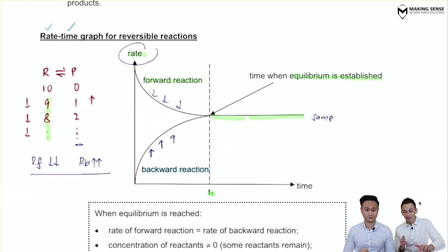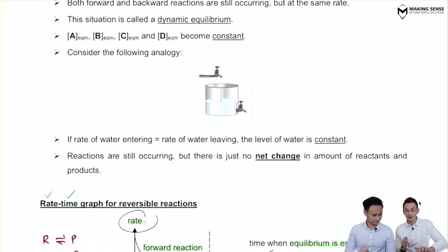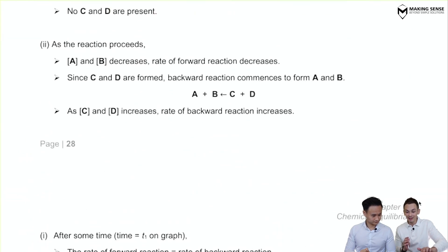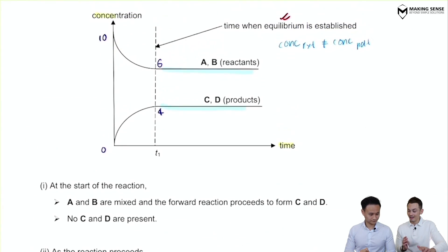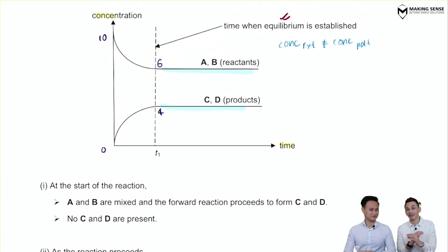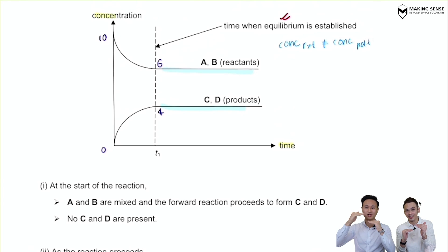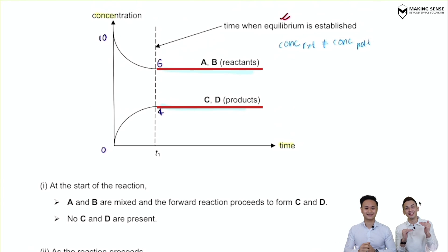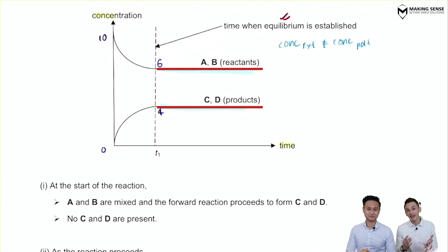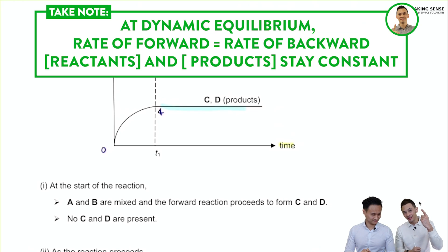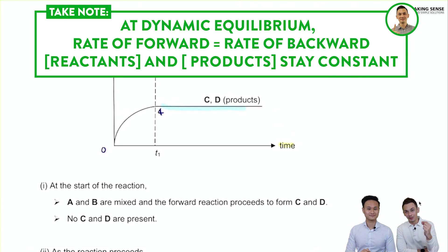When this happens, you have reached a state of dynamic equilibrium. Don't be confused by these two graphs — they are different. When it comes to rates, one of them is going down and one is going up until they meet and become identical. But as mentioned in the concentration-time graph, concentrations of reactants and products don't have to be equal — they just need to stay constant with time. That's concept number one: graphs of reversible reactions.